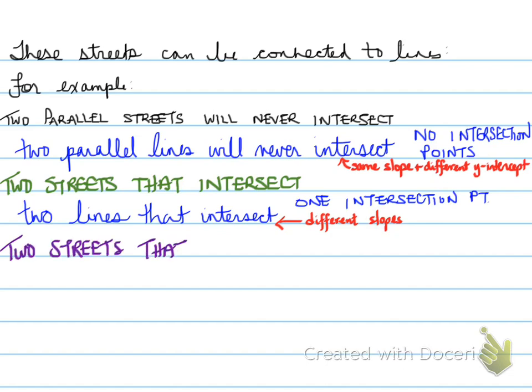All right. Now two streets that have the exact same, for example, a different name, but are implied that they're the exact same street. Well, the same can apply to linear equations. Linear equations of this type will look different. For example, one could be in slope intercept form. The other one could be in standard form. But then when you put them both in the same form, they'll have the exact same equation.